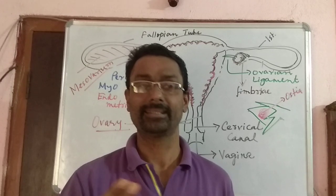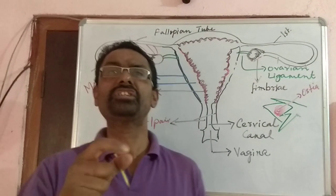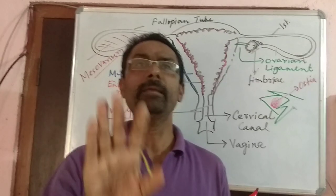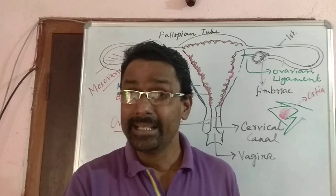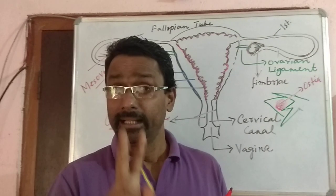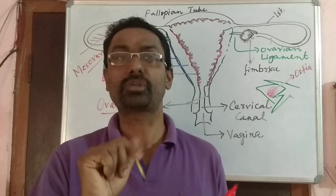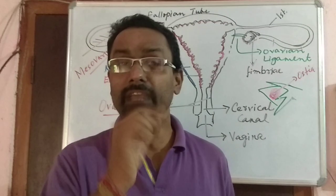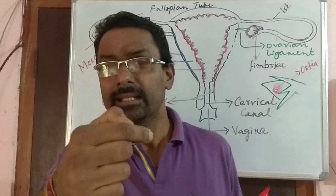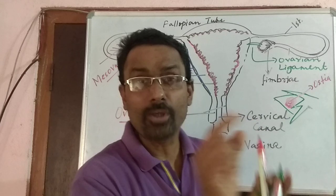Now for the external structure of the female reproductive system: externally it is called the external genitalia or the vulva. First, there is the mons pubis — fatty tissue covered by skin and having pubic hair. There are also the labia minora and labia majora. Labia majora is the outer flap of skin and labia minora is the inner flap of skin.